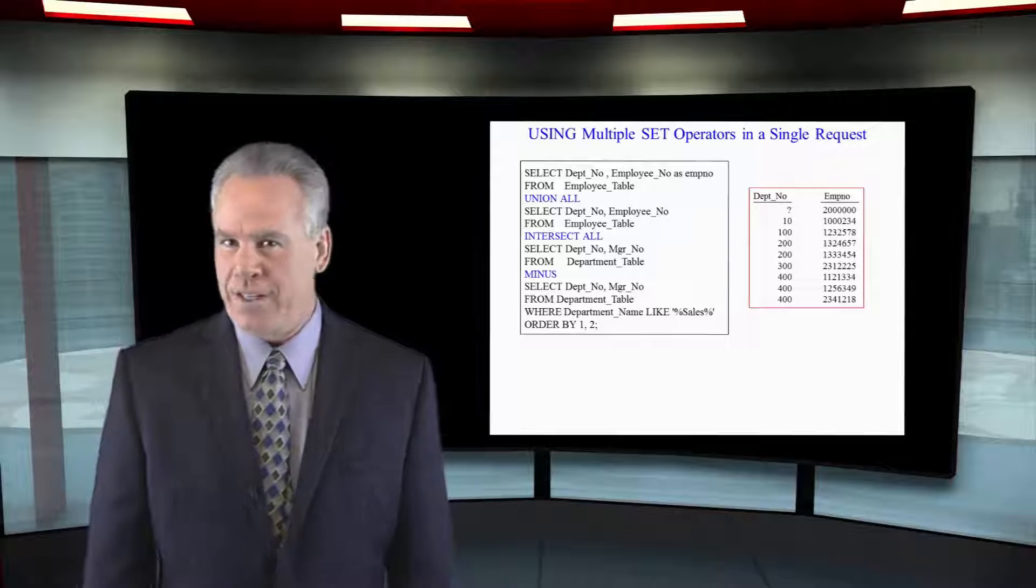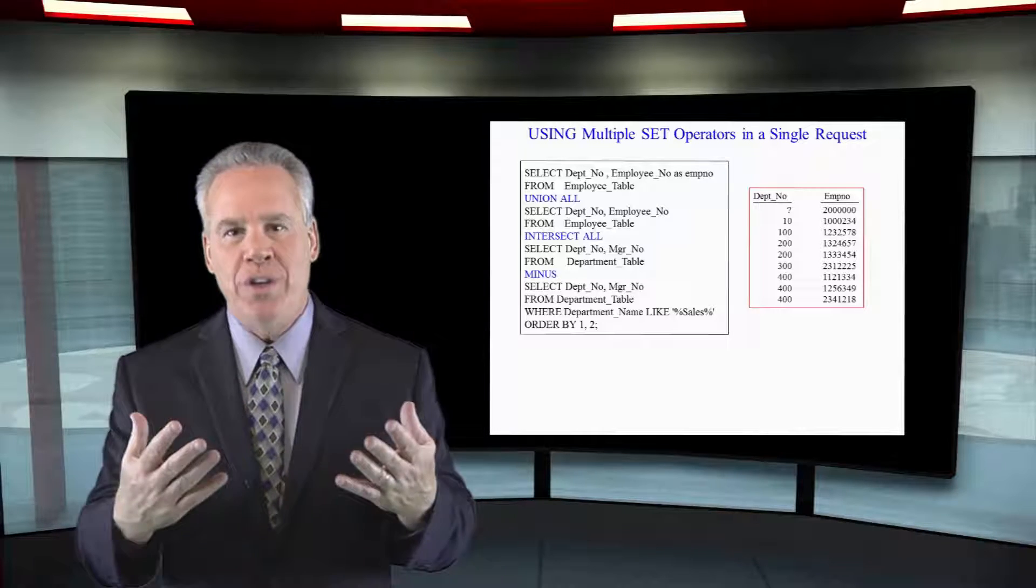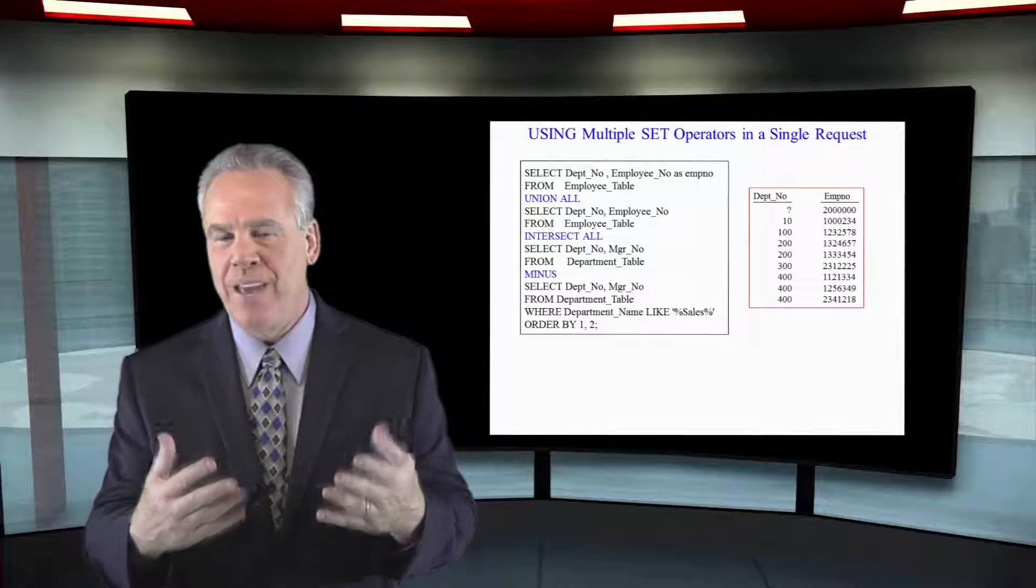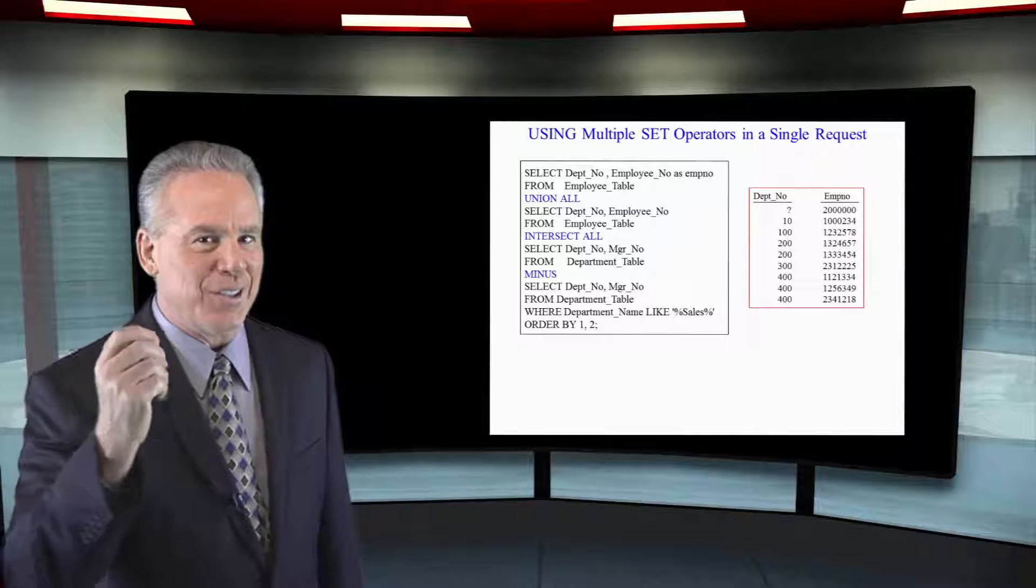But there's an order of precedence. When you have multiple set operators, union is evaluated first, and then intersect is second, and then accept or minus is third.